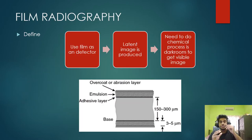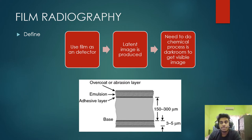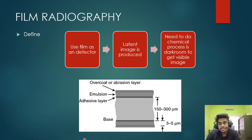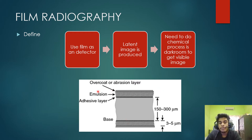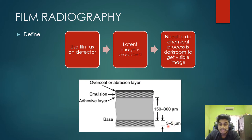Film radiography uses film as a detector, forming a latent image that is invisible until it goes through a darkroom chemical process to produce a visible image that can be checked by inspectors. The film consists of a polyester base, an emulsion layer usually made of silver bromide or silver halide, and a protective overcoat layer on top and bottom. The radiation leaves a mark on the emulsion layer, which is adhered to the base. The base is the thickest part, the emulsion is thinner, and the overcoat layer is the thinnest at about one micron.